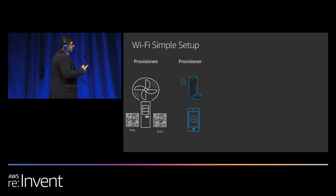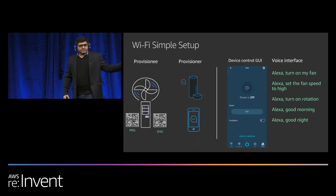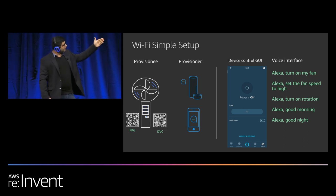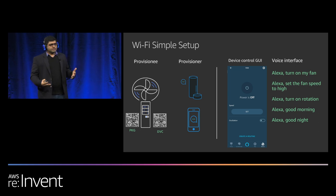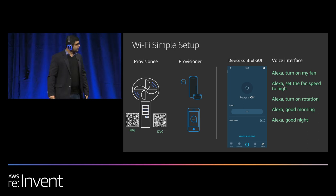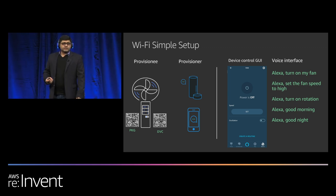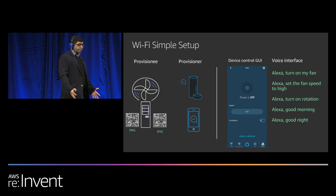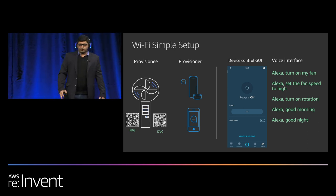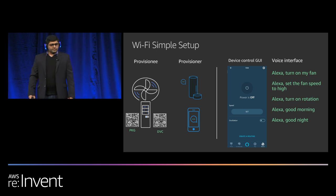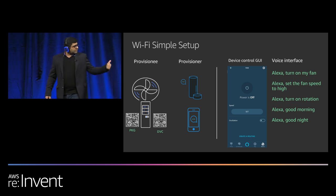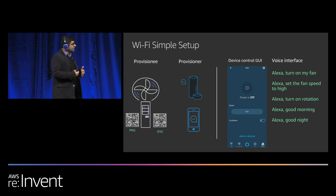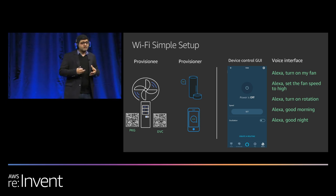As a result of Wi-Fi Simple Setup, a control page is created for you with the power controller for on and off, the speed control, and the oscillation graphical interface. You can then say turn on my device or set the fan speed. There's another interesting thing — you can tie to routines. For example, saying Alexa, good morning can trigger multiple events together, like starting your coffee machine and setting the fan speed to high, all with one command.